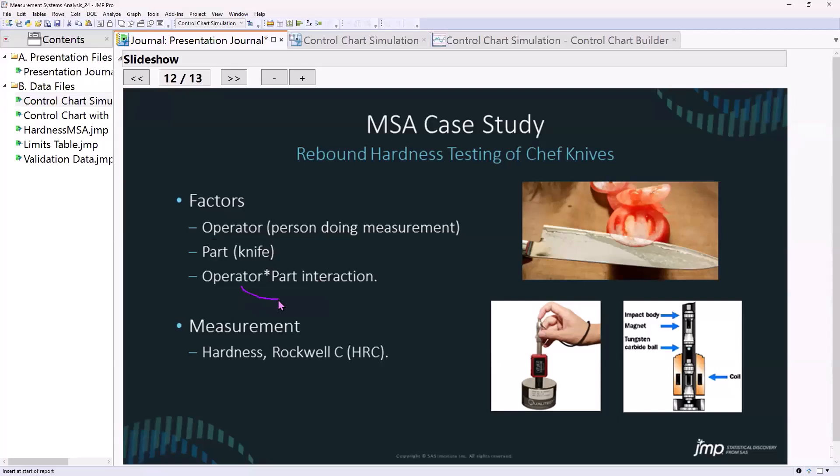And in this case, how me as an operator, how I hold that rebound tester may influence the hardness measurement that I get. So I better include an interaction between operator and part. So let's take a look at the data table from that. It's the hardness MSA.